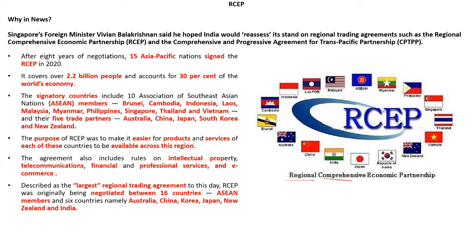From the name itself we can understand that RCEP is fully based on regional cooperation for the effectiveness of economic activities of Asian countries. Singapore's Foreign Minister Vivian Balakrishnan said he hoped India would reassess its stand on regional trading agreements such as RCEP and the Comprehensive and Progressive Agreement for Trans-Pacific Partnership (CPTPP). So today we look at both RCEP and CPTPP. RCEP is being signed between 15 Asia-Pacific nations.